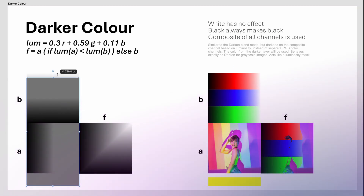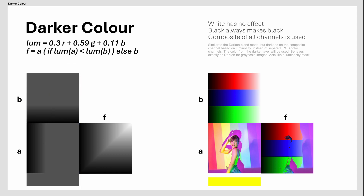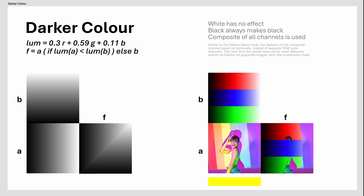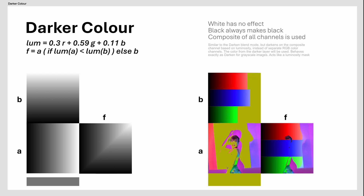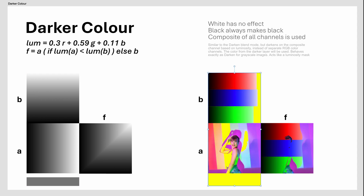Darker Color is very similar to Darken, with the difference that the perceived luminosity values of the pixels will be used to determine which pixel is darker. Acts a bit like a luminosity mask.